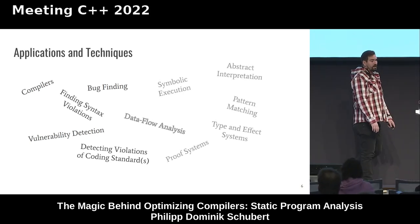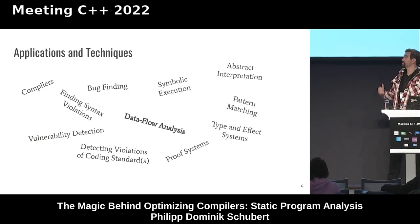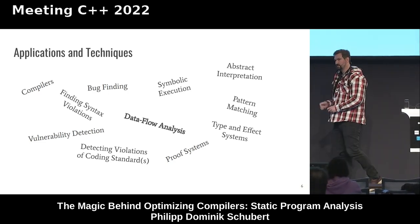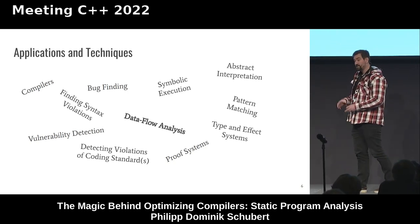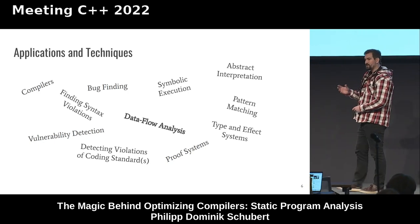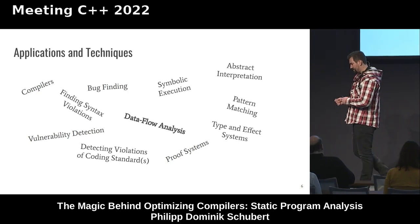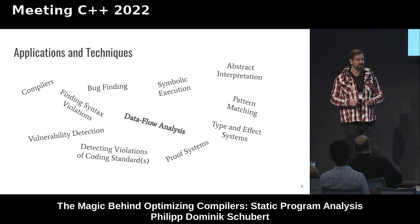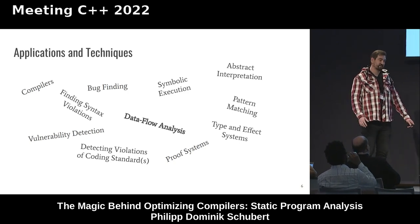So why static analysis? Let's look at applications and techniques. We have compilers — computing interesting properties to build cool optimizations to make your program run faster. Bug finding, vulnerability detection, finding syntax violations, or detecting violations of coding standards by tools like Clang Tidy. We have multiple techniques: abstract interpretation, pattern matching — that's what Clang Tidy uses for the most part, building the AST and using matchers to find AST patterns that may find code smells, bugs, and potentially vulnerabilities.